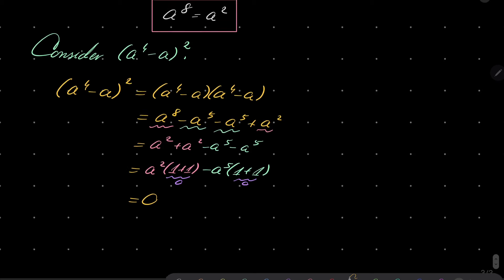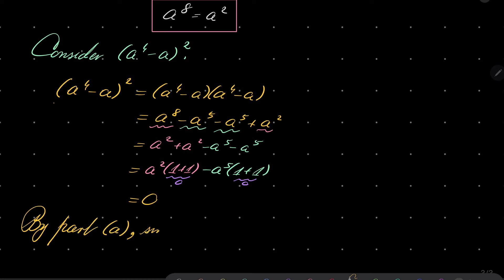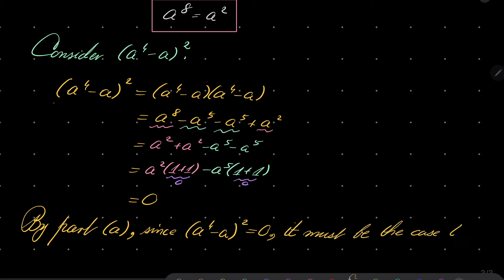Now it's time to use part A, because we have demonstrated that (A to the fourth power minus A squared) squared equals zero. By part A, since A to the fourth power minus A squared is zero, it must be the case that A to the fourth power minus A is zero, so A to the fourth power equals A. And that closes our proof, because it's exactly what we wanted to demonstrate.